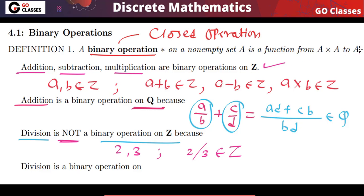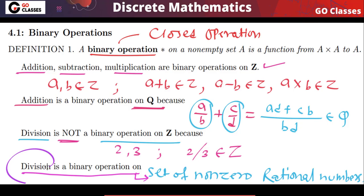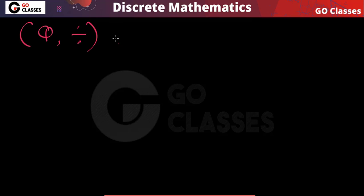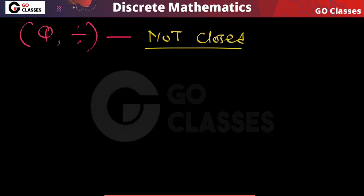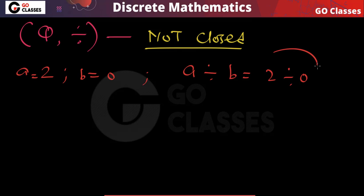Division is a binary operation on the set of non-zero rational numbers (Q*). Division is not a binary operation on the set of all rational numbers Q because if you take A = 2 and B = 0, then A divided by B is 2/0, which is not a rational number. So rational numbers are not closed under division.